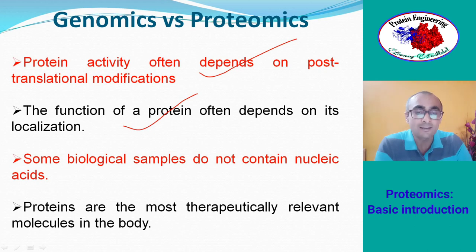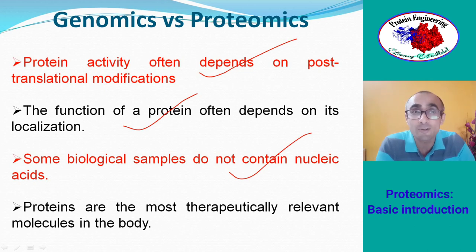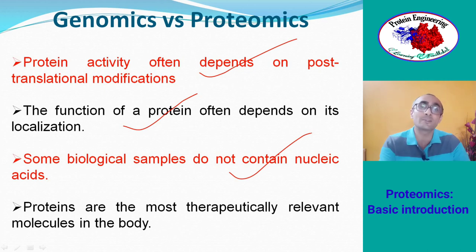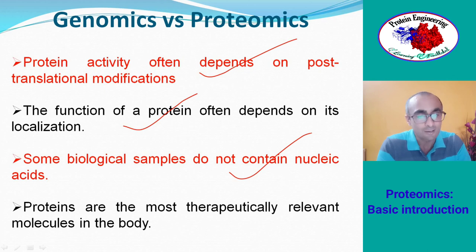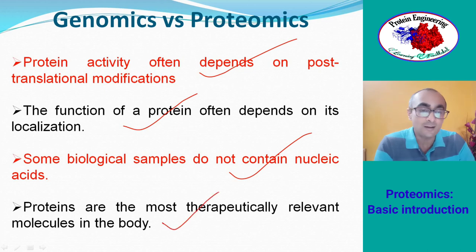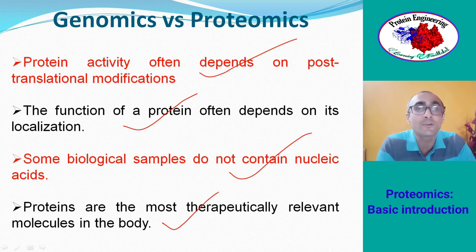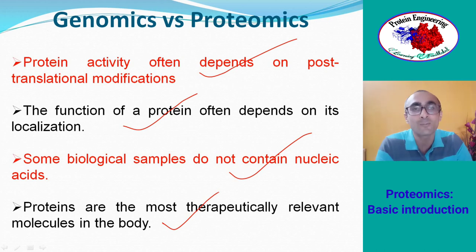There are biological samples which do not contain nucleic acid, so you cannot perform genomics on those. For example, human body fluids like synovial fluid or cerebrospinal fluid contain only proteins that have diffused from surrounding epithelial cells — there is no nucleic acid or genome available in those fluids, so proteomic studies are the only option. Most importantly, proteins are the most therapeutically relevant molecules in the body — they are the drug targets for curing different diseases, and that information comes from proteomic studies.